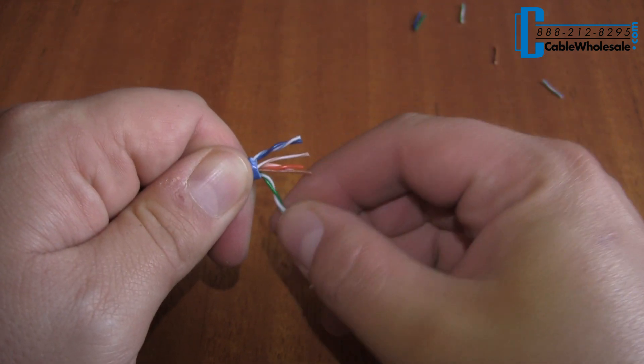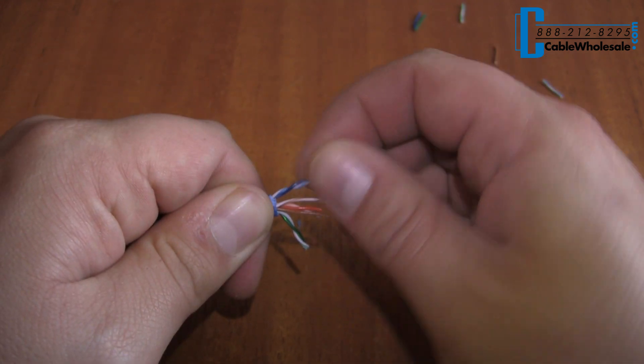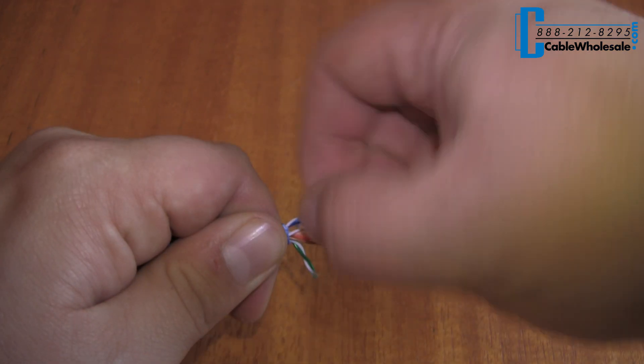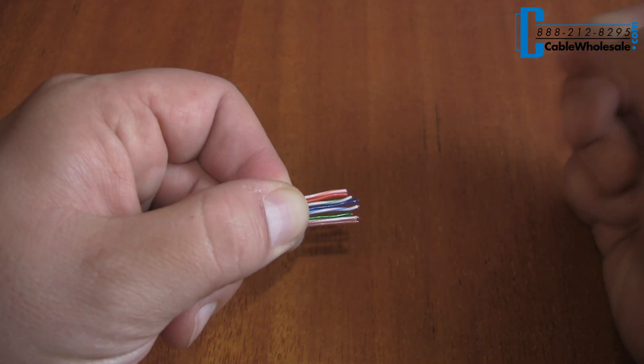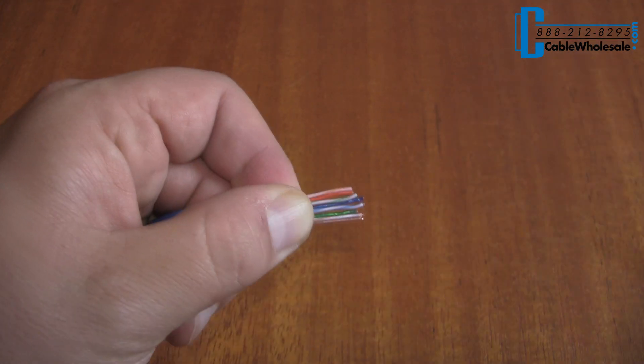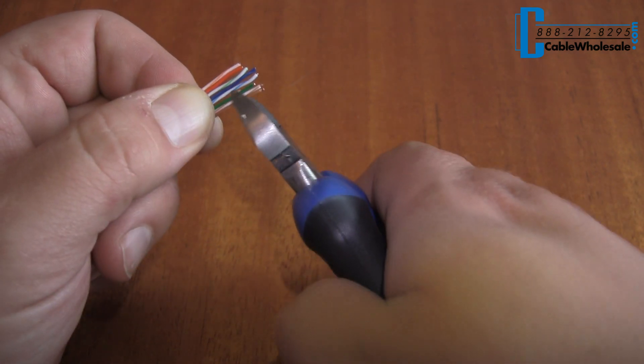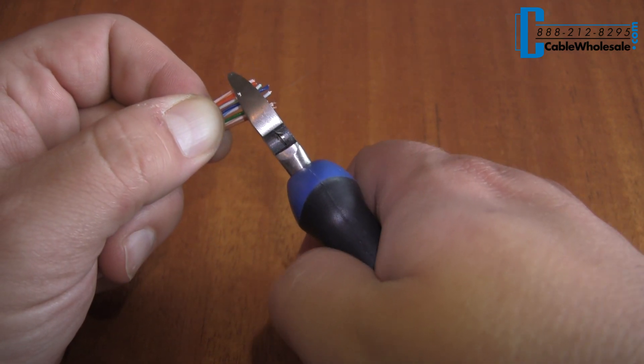Next you will need to untwist each pair of wires and align the wires in the proper order. After all the wires are untwisted and aligned in the proper order, snip the ends off the wire with the wire cutters.